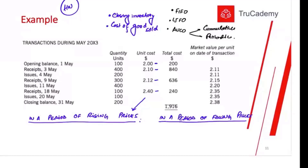This is the same concept from MA1. In a period of rising prices, if you want to see a comparison between all the methods in closing inventory — how it will affect the closing inventory prices and the cost of goods — this question had unit costs starting at two dollars, then 2.10, 2.12, 2.40, and so on. So obviously it was a period of rising prices. Let's say we use the FIFO method — first in, first out.